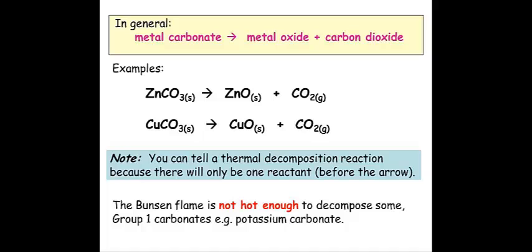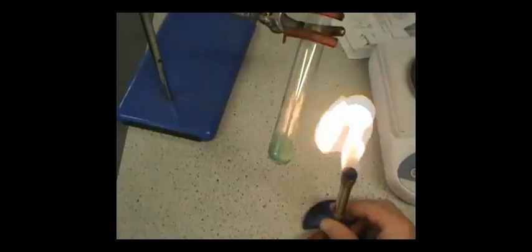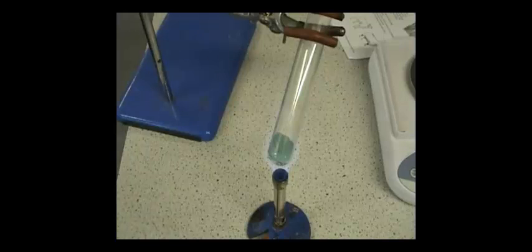One way of telling that there is a thermal decomposition reaction taking place is that you will have only one reactant before the arrow in an equation. If we take a sample of metal carbonate and weigh it before thermally decomposing it by heating it, what we will see is that as carbon dioxide gas is allowed to escape, the weight of sample will decrease.